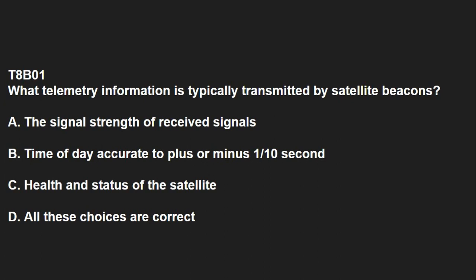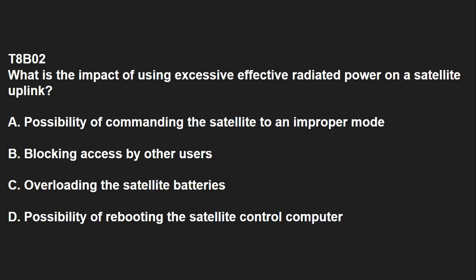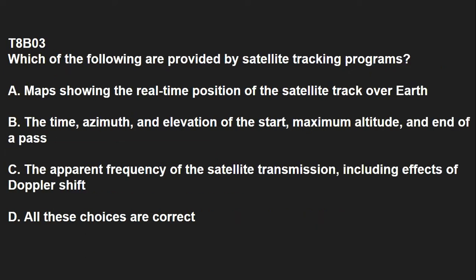T8B01: What telemetry information is typically transmitted by satellite beacons? That would be the health and status of the satellite. T8B02: What is the impact of using excessive effective radiated power on a satellite uplink? You are blocking access by other users. T8B03: Which of the following are provided by satellite tracking programs? That answer is D, all of these choices are correct: maps showing the real-time position of the satellite track over Earth, the time, azimuth, and elevation of the start, maximum altitude, and end of a pass, and the apparent frequency of the satellite transmission including the effects of Doppler shift.